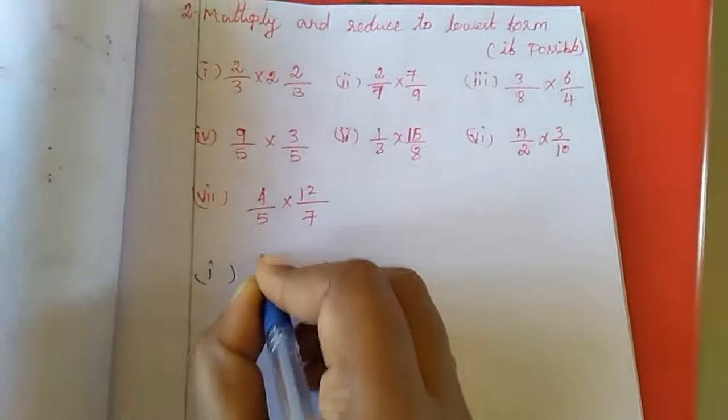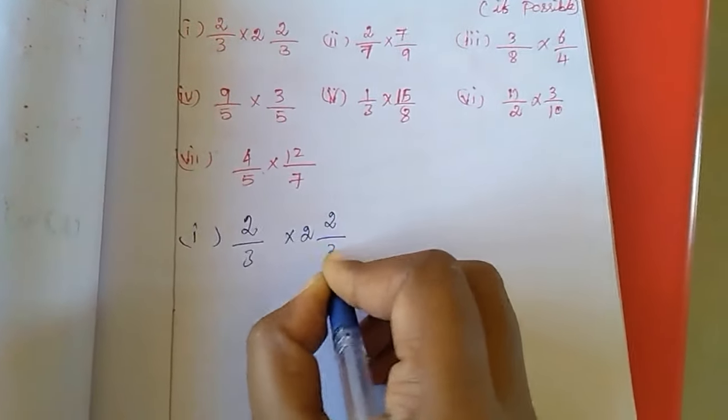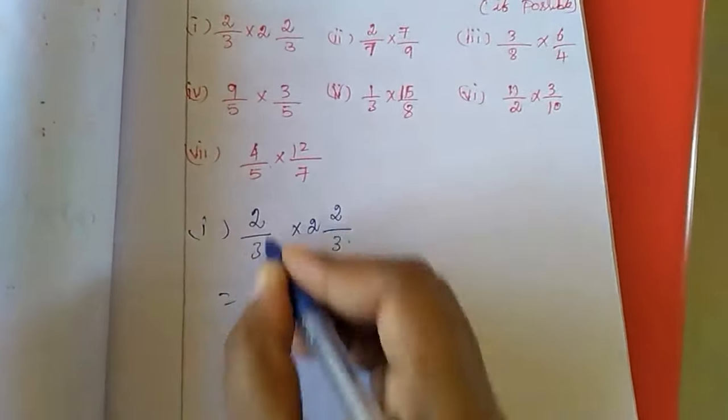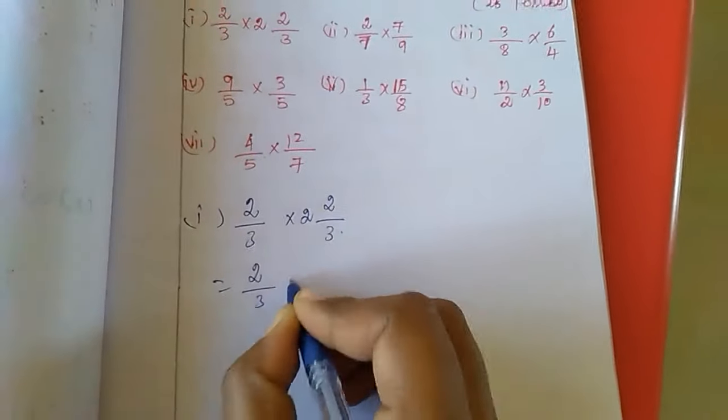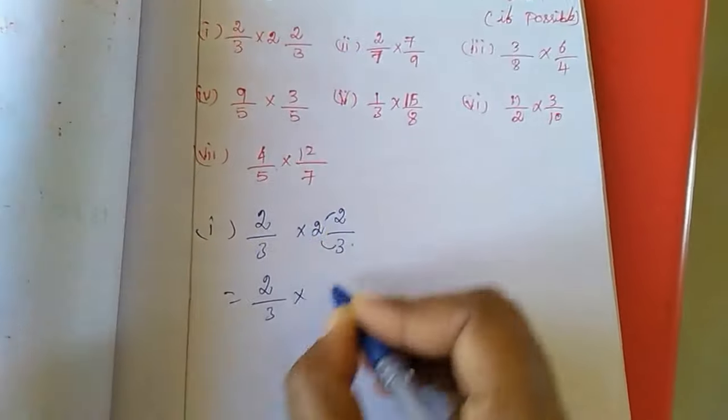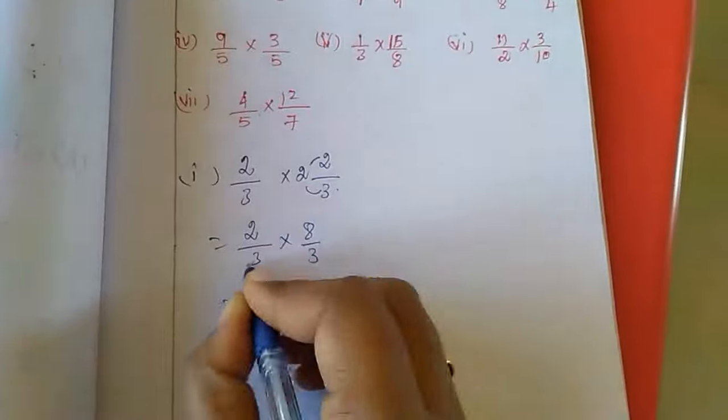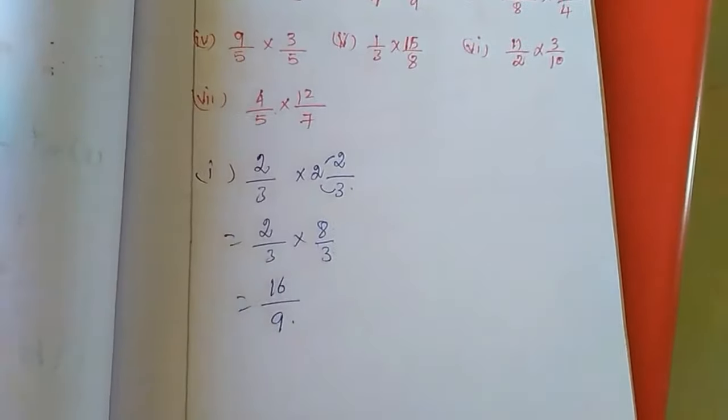See here, first sum is 2/3 into 2 and 2/3. I am going to change this mixed fraction. First you have to write this fraction as is, then you have to change: 3 times 2 is 6, 6 plus 2 is 8, so 8/3. Now I am multiplying 2 times 8 is 16 divided by 3 times 3 is 9. This is the answer.